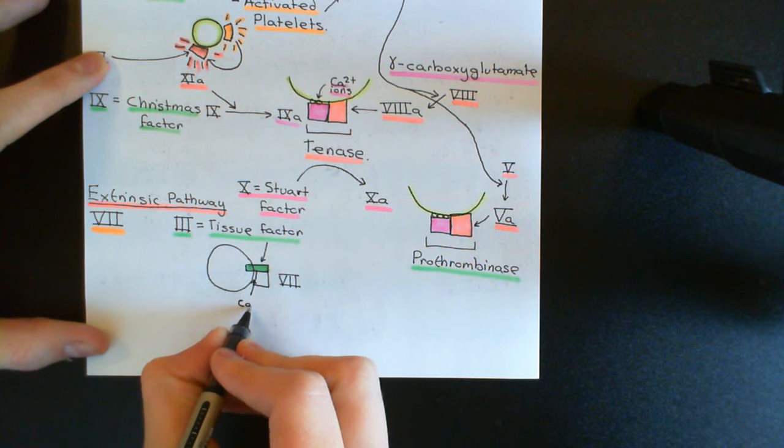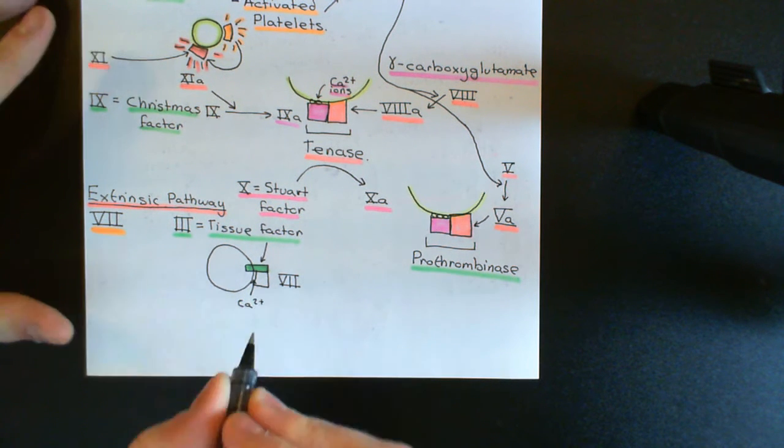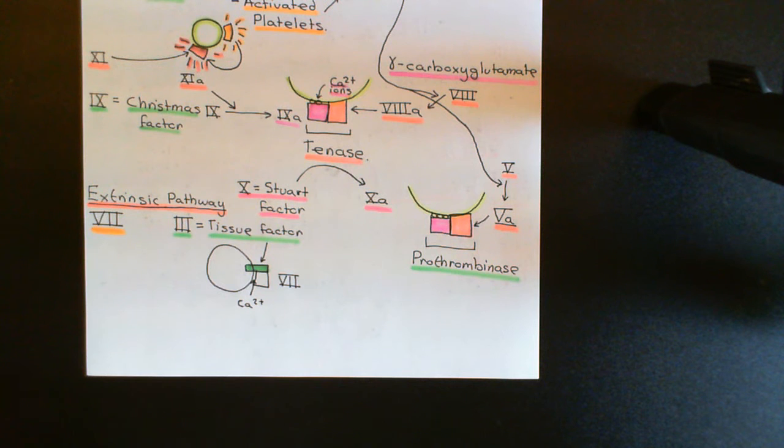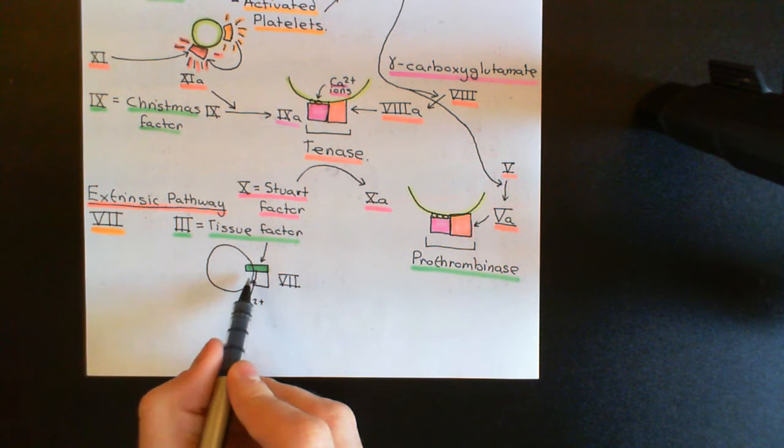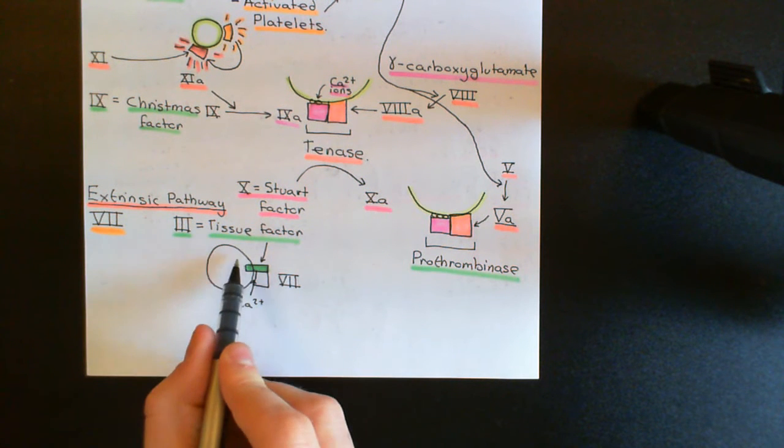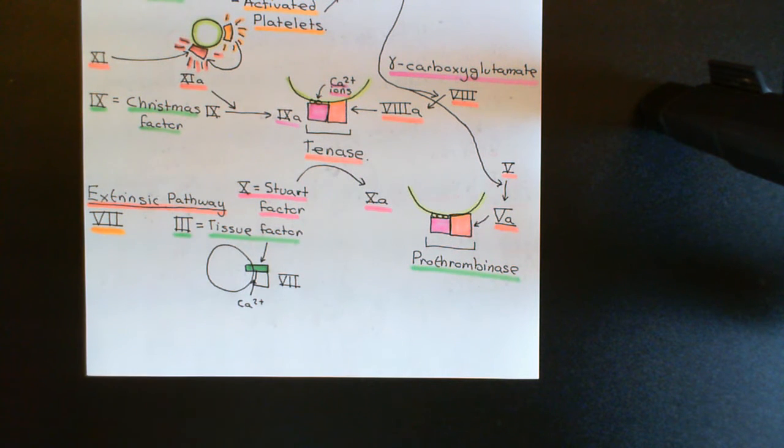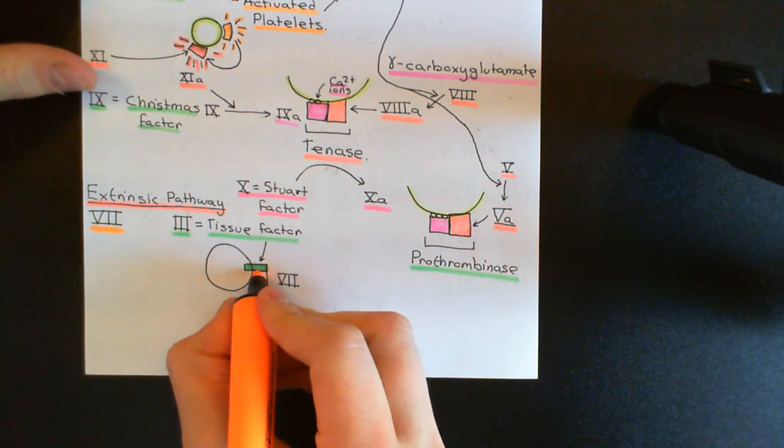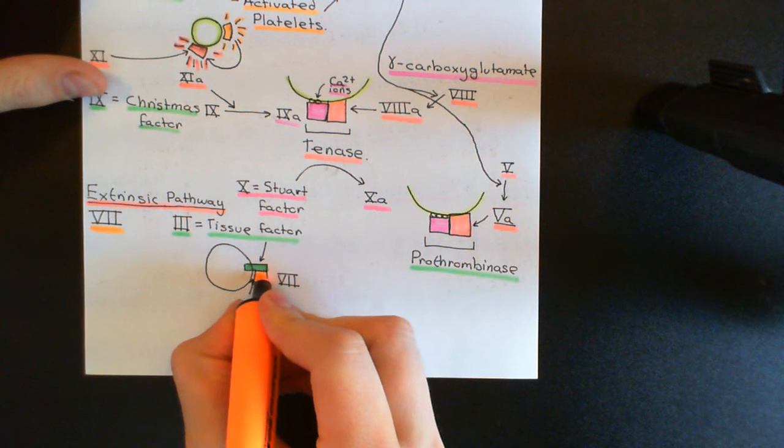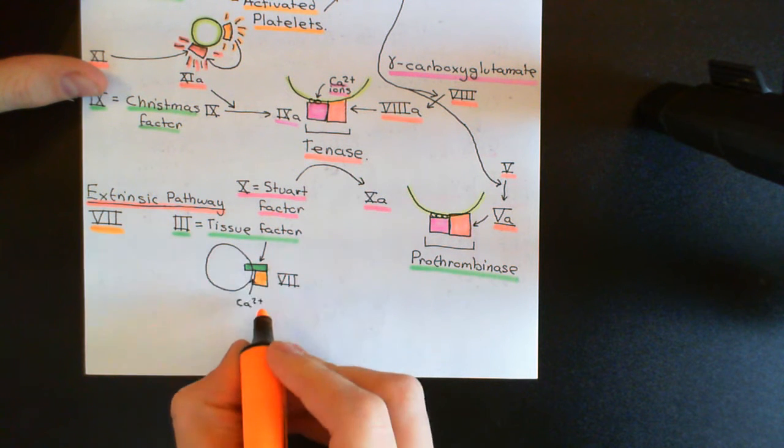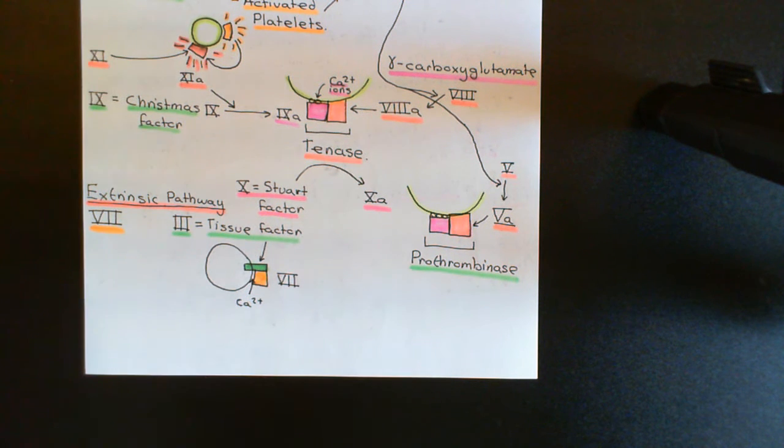Factor 7 is another one of these coagulation factors that has gamma carboxyglutamate residues in it. And in order to bind to the phospholipid bilayer of these cells, it needs calcium ions there. So again, this is why calcium ions are becoming important here. Factor 7 forms this complex with tissue factor and calcium ions.